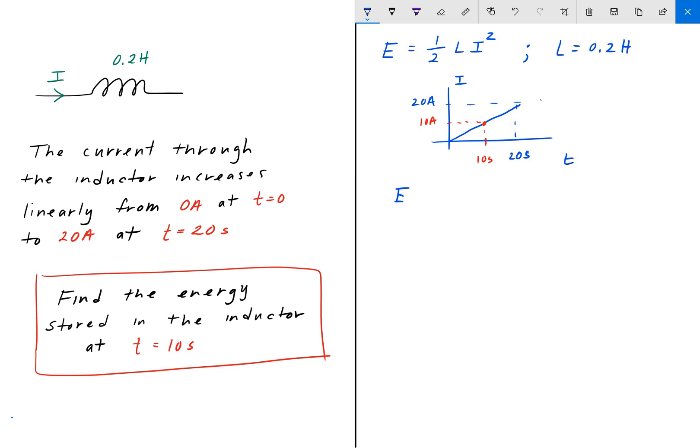Energy is equal to one-half times 0.2 times 10 amps squared, which is one-half times 0.2 times 100. 100 times 0.2 is 20, so one-half of 20 is 10. That is our answer. We have 10 joules stored in this 0.2 henry inductor.